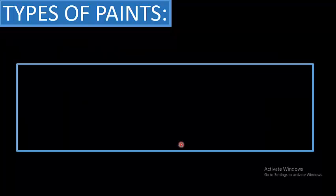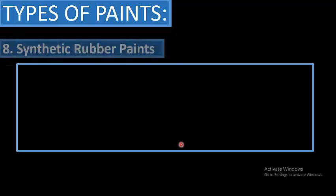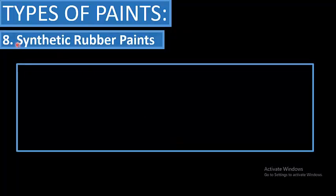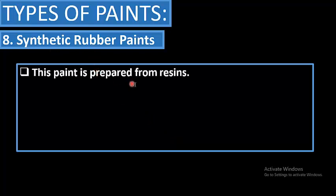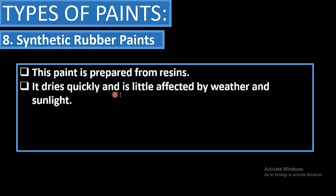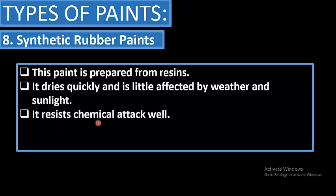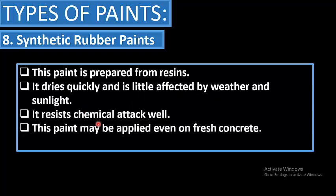The eighth and last type is synthetic rubber paint. This paint is prepared from resins, dries quickly, and is little affected by weather and sunlight. It resists chemical attack well and may even be applied on fresh concrete.